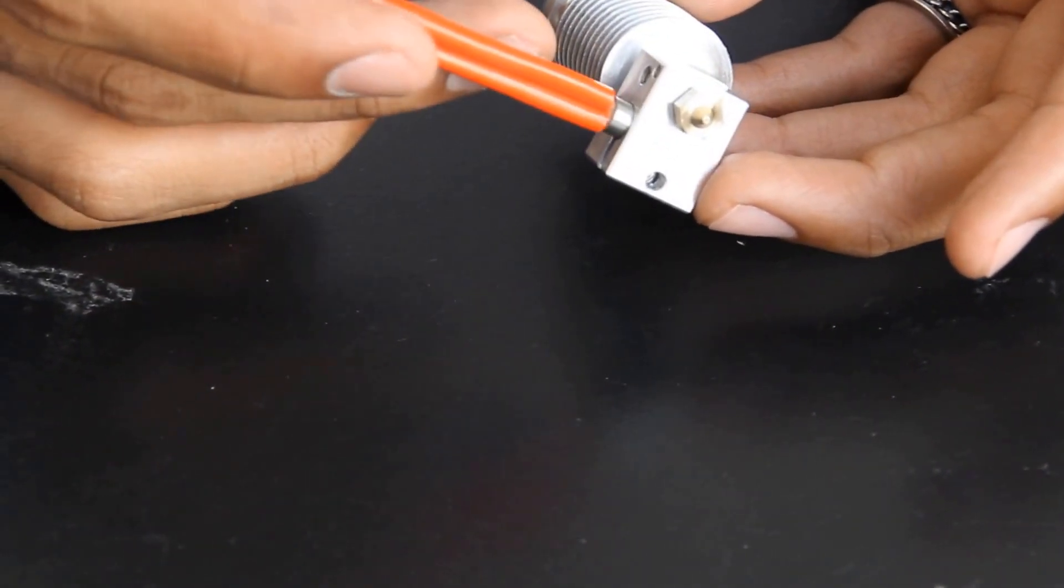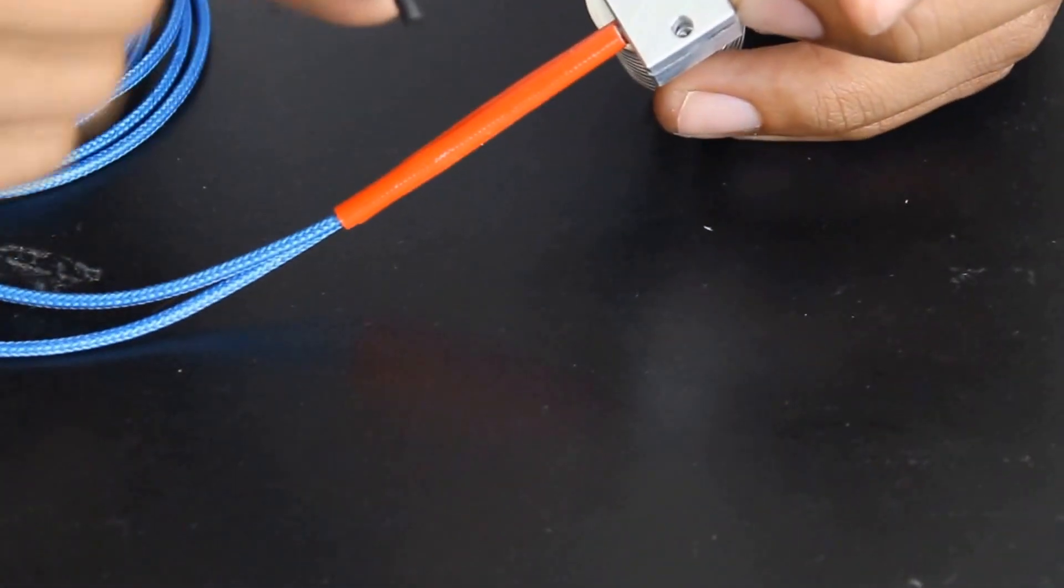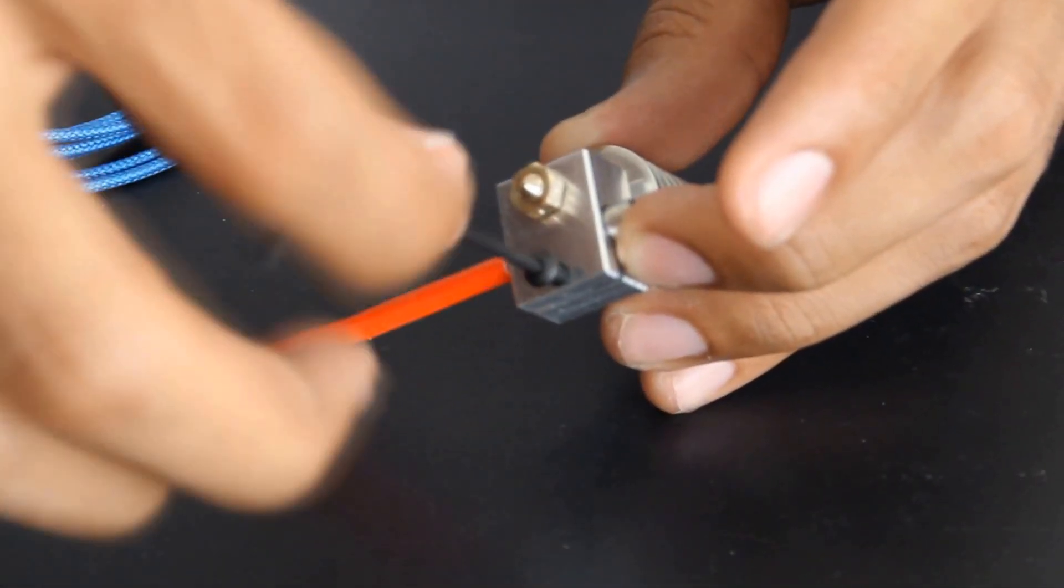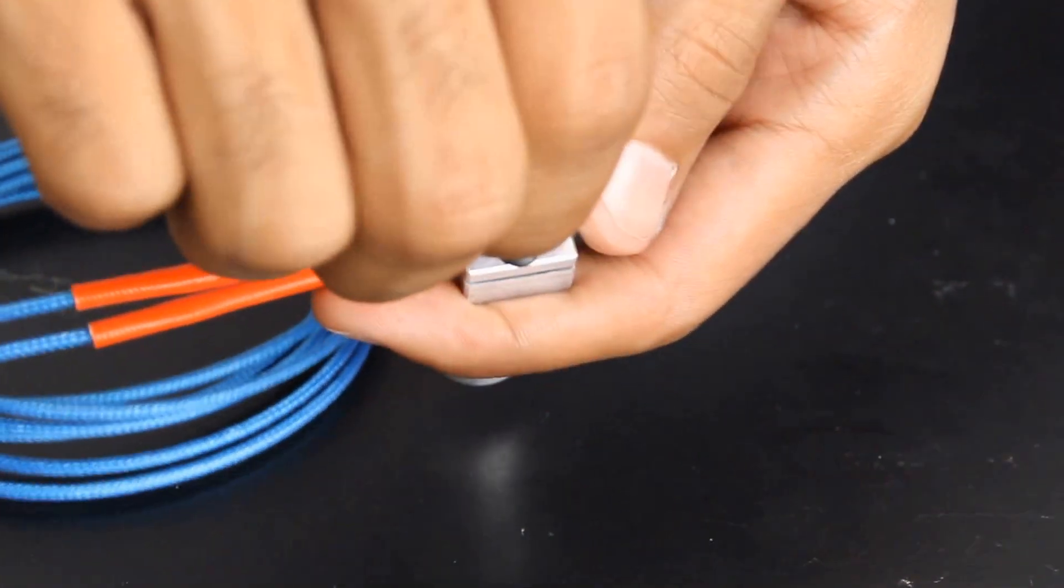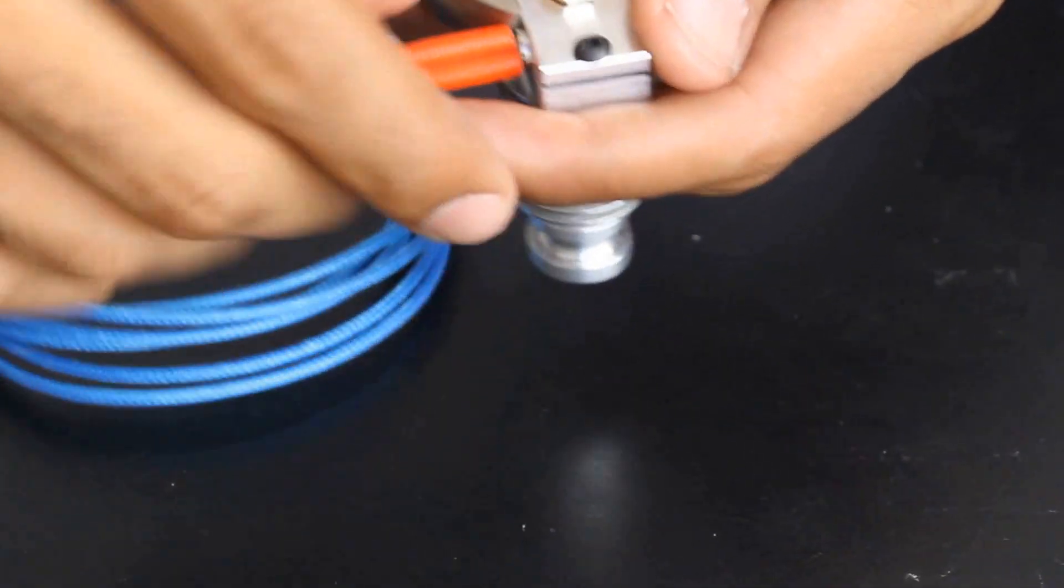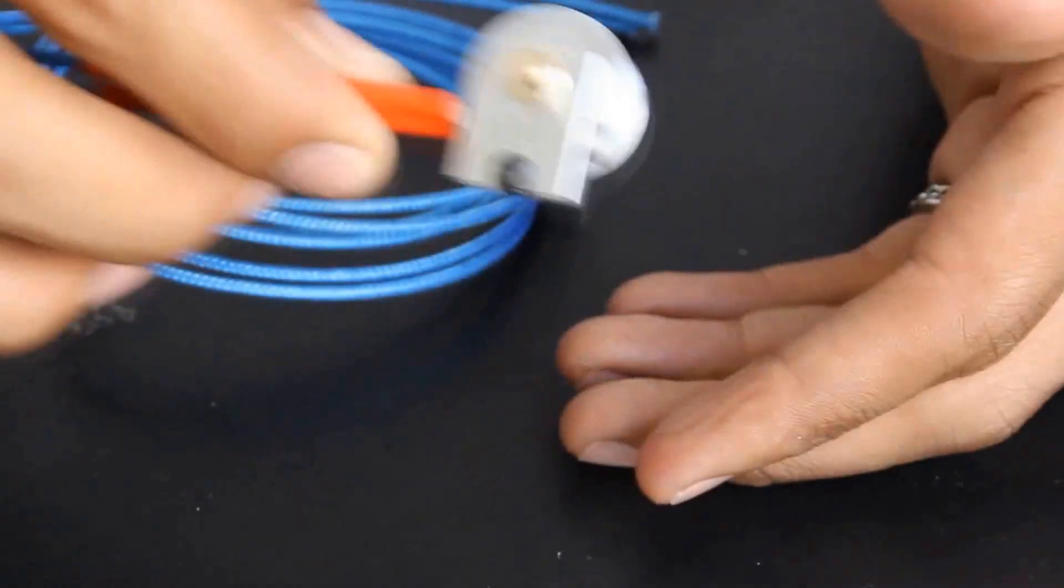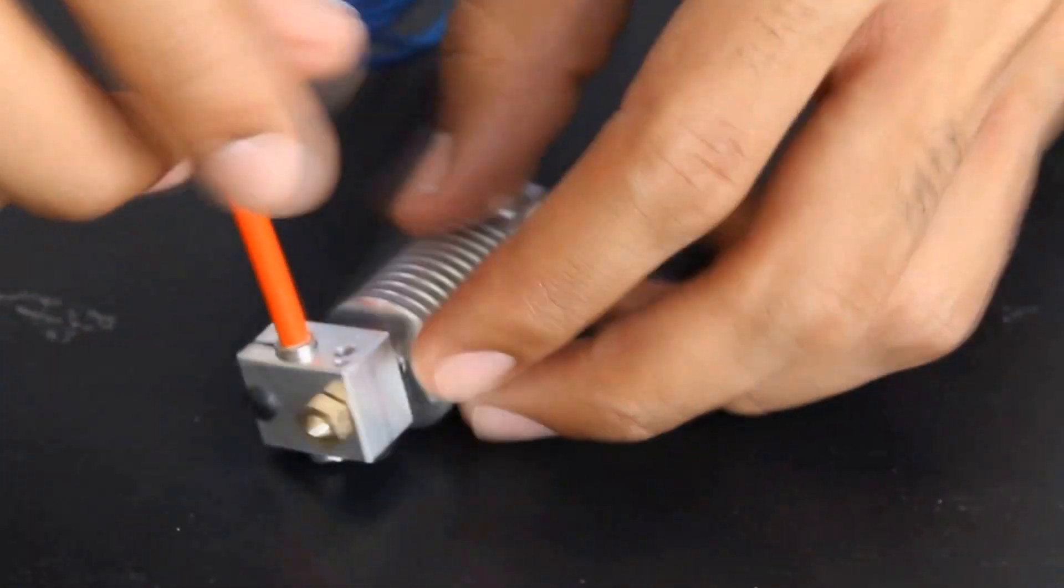So I'm going to put my heater cartridge in here like this. Then you're going to take the longer screw you have and the Allen key that was supplied, and you're just going to screw this in here. I'm using the crescent wrench and the supplied Allen key to tighten this up. You basically shouldn't be able to move the heater cartridge after it is secured. Next thing we're going to do is the thermistor on the side.